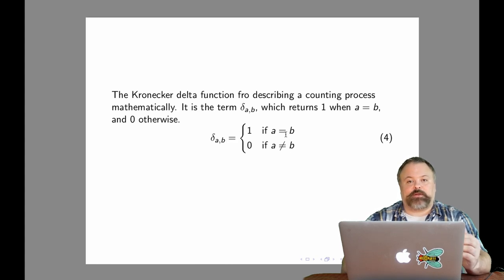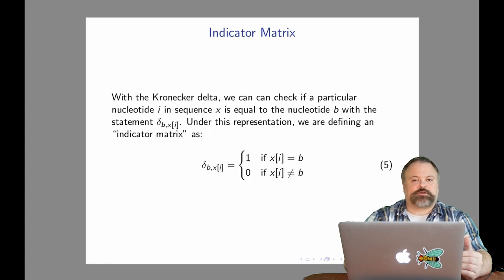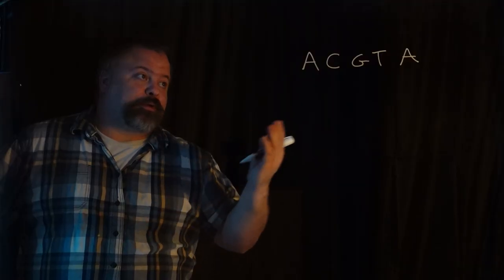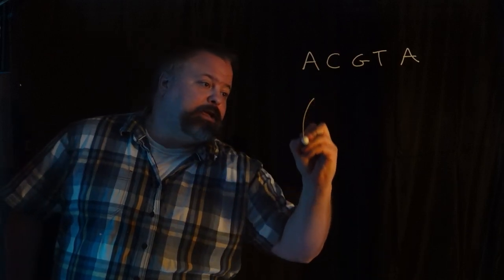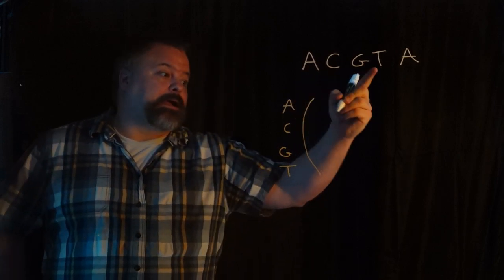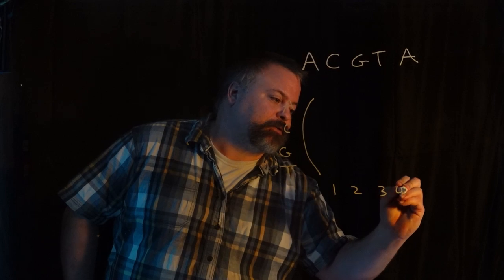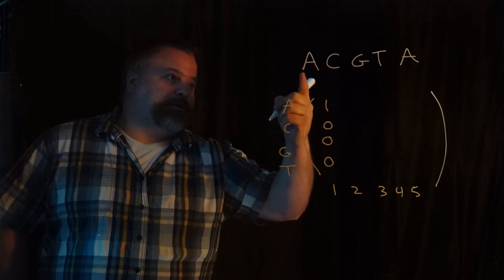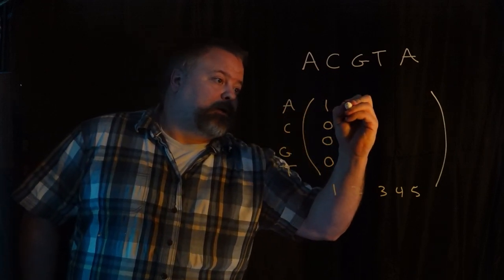Delta a, b is defined by this piecewise function. We can apply this Kronecker delta function to define an indicator matrix. An indicator matrix is basically 1 whenever the sequence x at position i has the base b and 0 otherwise. We can write it delta sub b xi. For a particular sequence like ACGTA, our indicator matrix would have rows corresponding to the four nucleotides and columns corresponding to positions along our sequence. We put a 1 at the first position in the A row because our sequence has an A at the first position, and so on.